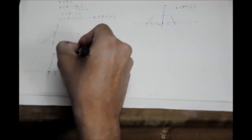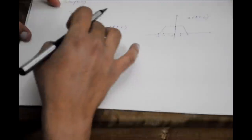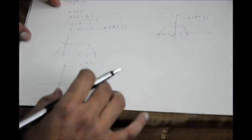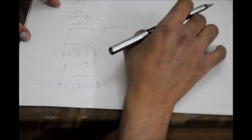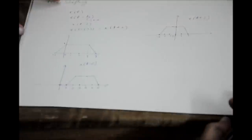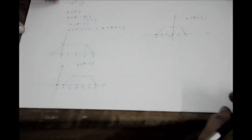We don't really need to go through all those long steps. For x of t minus 2, just shift the curve 2 units to the right. For x of t plus 2, shift the curve 2 units to the left. That is time shifting.